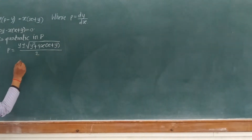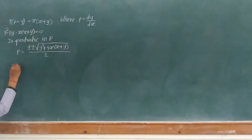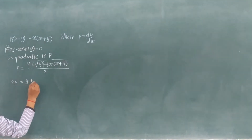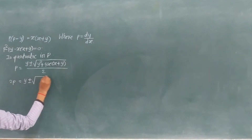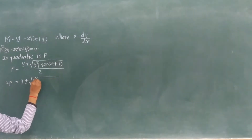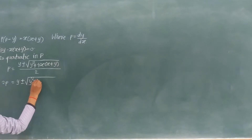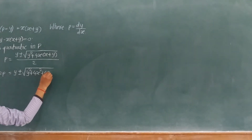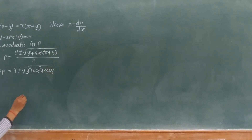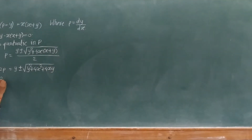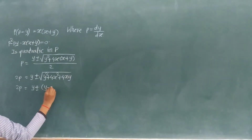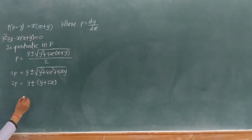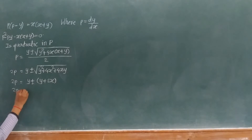On further solving, 2p equals y plus or minus (y plus 2x). Since y squared plus 4x squared plus 4xy is the expansion of (y plus 2x) squared, taking its square root gives y plus 2x. So 2p equals y plus or minus (y plus 2x) is the solution of that quadratic in p equation.